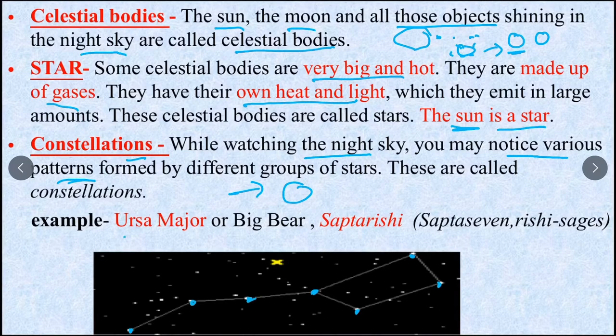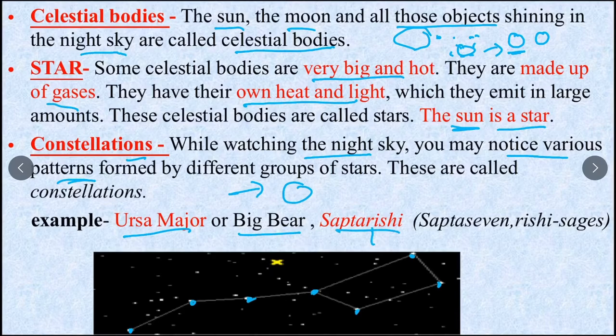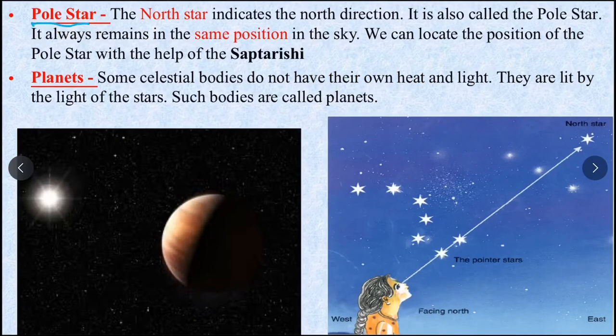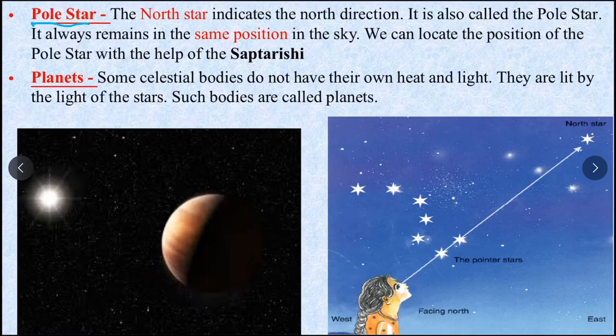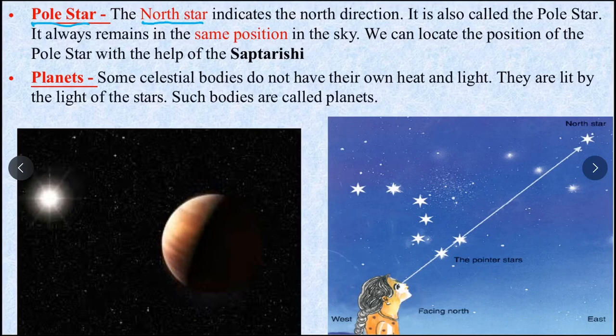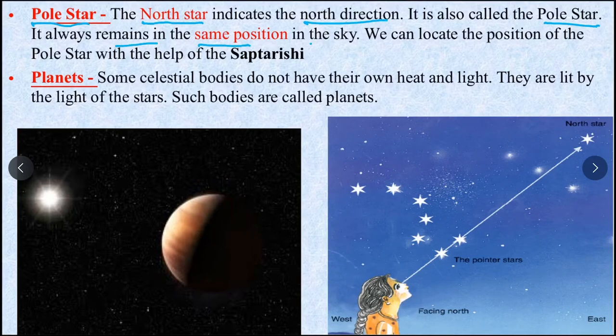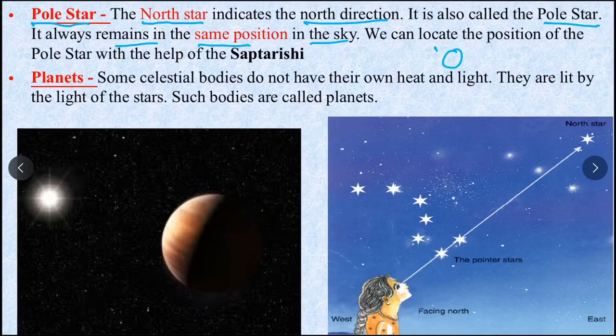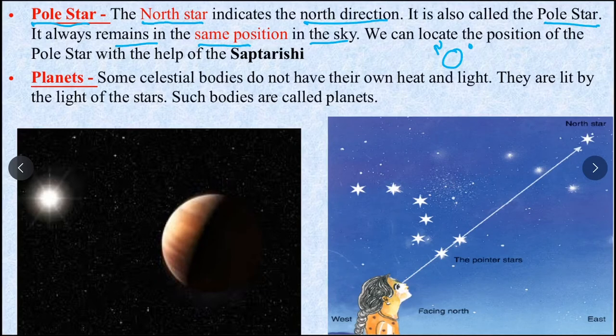Now let's read about Polestar. This is the north star which indicates the north direction. It always remains in the same position in the sky. This is Earth, this is north side, Polestar is on the north side. It remains in the same position because Earth rotates.